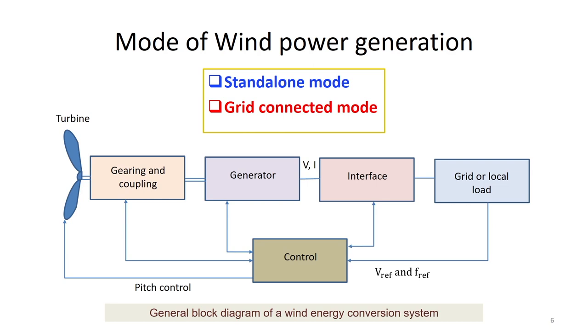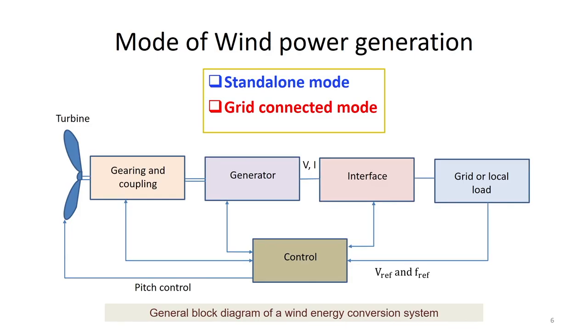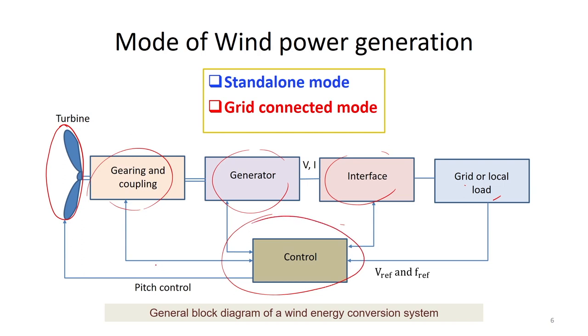Modes of wind power generation include standalone mode and grid connected mode, as well as hybrid technologies like wind-diesel and solar-wind hybrid systems based on resource availability. The block diagram of a wind energy conversion system comprises a rotor, gearing and coupling, generators, interface, grid or local load, all controlled by control units. A pitch control mechanism is also needed to control the speed.